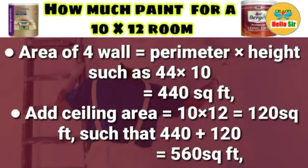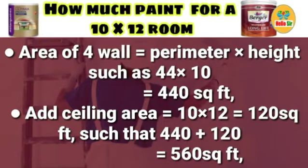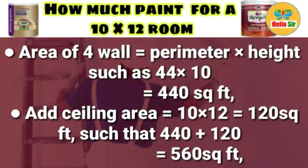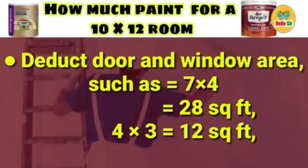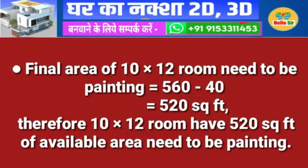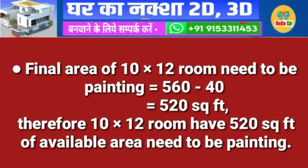Ceiling area equals 10 x 12, which comes out to 120 sq ft. Total area is 440 plus 120, which comes out to 560 sq ft. Next, deduct the door and window area: door is 7 x 4, which comes out to 28 sq ft, and window is 4 x 3, which comes out to 12 sq ft.